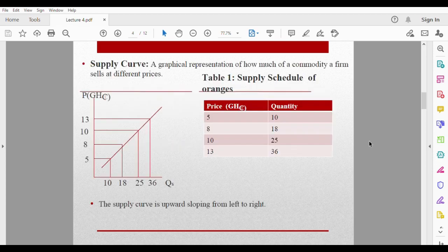The next thing is the supply curve. A supply curve is a graphical representation of how much of a commodity a firm sells at different prices. Normally a supply curve is derived from a supply schedule. Let's first look at this supply schedule - it's basically a tabular representation of how much a firm sells at different prices.